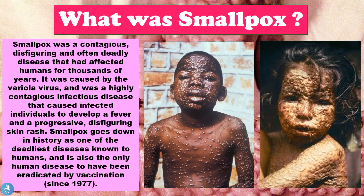So what was smallpox? Smallpox was a contagious, disfiguring and often deadly disease that had affected humans for thousands of years. It was caused by the variola virus and was a highly contagious infectious disease which caused infected individuals to develop a fever and a progressive disfiguring skin rash. Smallpox goes down in history as one of the deadliest diseases known to humans and is also the only human disease to have been completely eradicated by vaccination, and this has been since 1977.